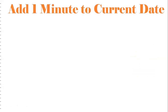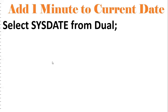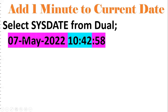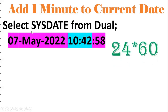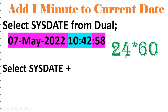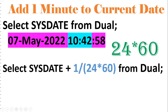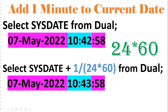Similarly, if I want to add one minute to the current date — current time is 10:42:58 and I want to convert it to 10:43:58 — we know in a day there are 24 hours and in one hour there are 60 minutes. So we do SYSDATE + 1/(24*60). That adds one minute, converting 10:42 to 10:43:58. For two minutes: 2/(24*60). To subtract, use minus instead of plus.